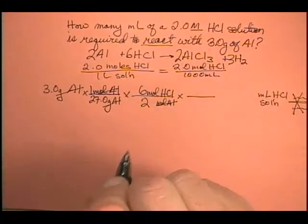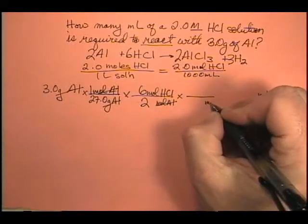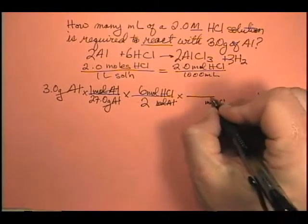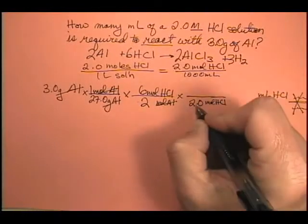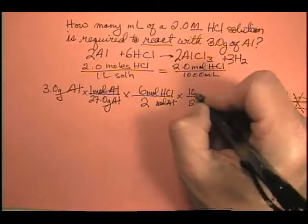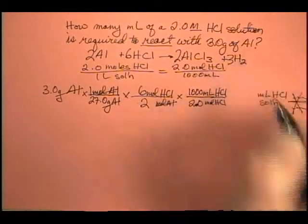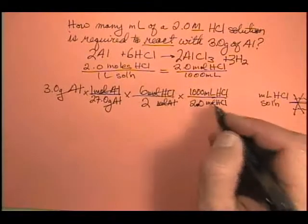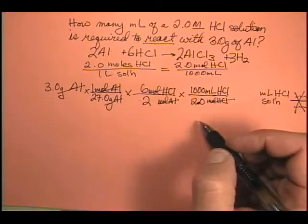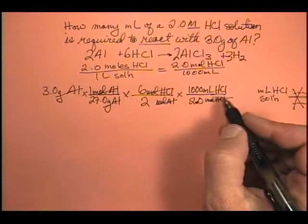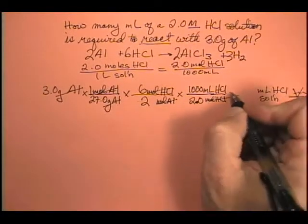Well, let's do that so I can just finish in one step. Moles have to go on the bottom. Down here, how many? 2.0 moles of HCl are in 1,000 milliliters of HCl solution. Moles HCl cancel. And I'm ready to plug and chug. Milliliters of HCl, milliliters of HCl.